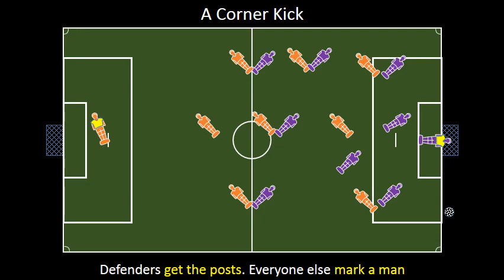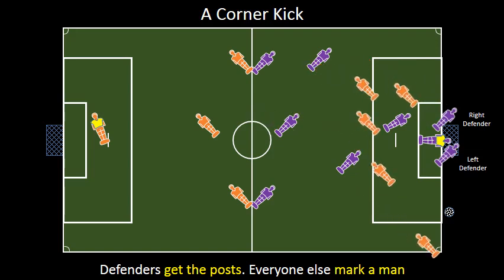Once you know a corner kick is going to happen on your side of the field, it's important to get ready to defend against it. The right defender should get the right goal post, and the left defender should get the left goal post. The other team is going to crowd the box to try and score. Every one of their men needs to be defended against — mark up their men. You should be standing right next to their feet, between them and the goal.